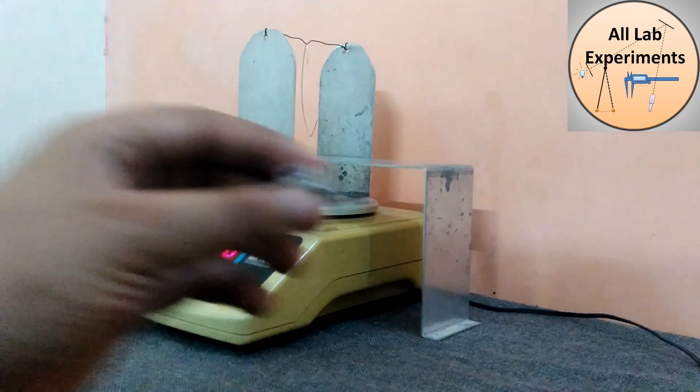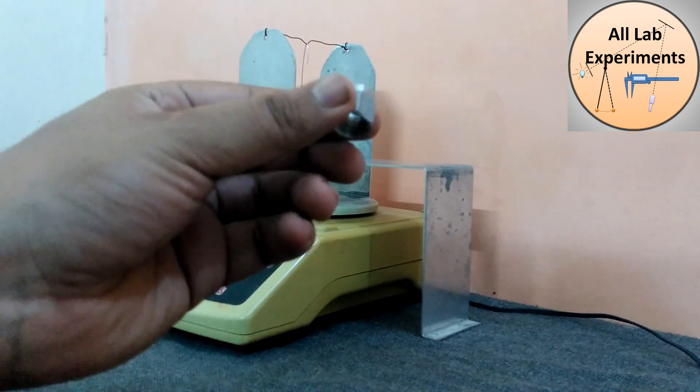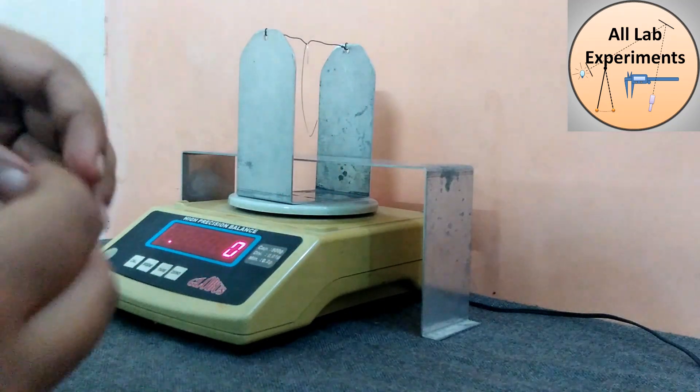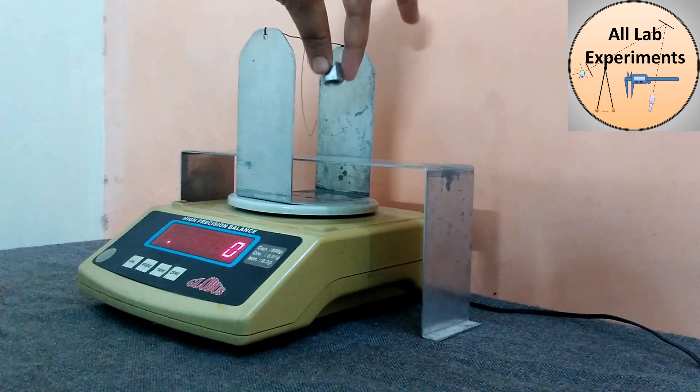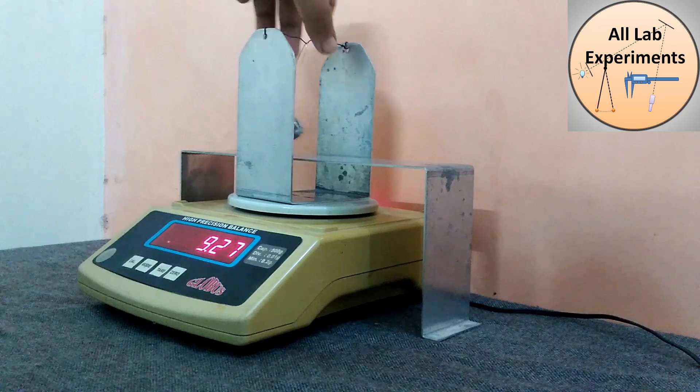Now we need to calculate the density of this irregular body. To do so, what I am doing, I am hanging this material with this wire.